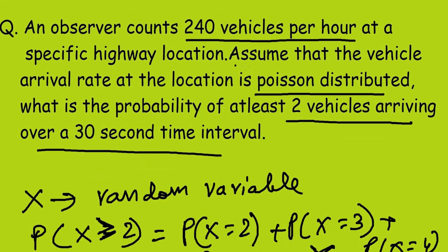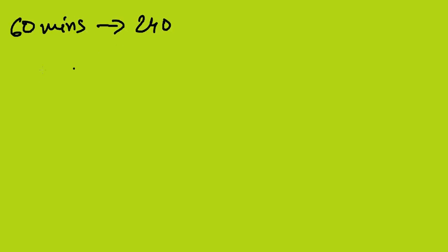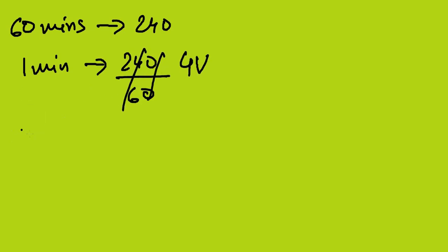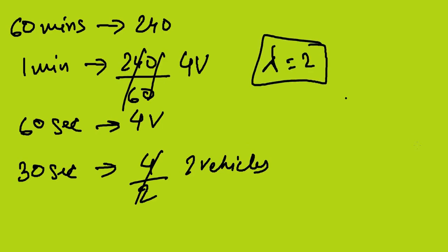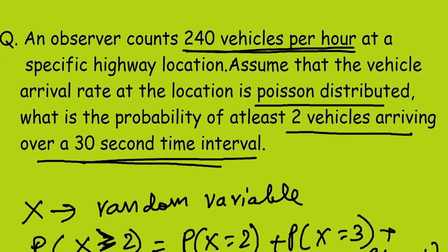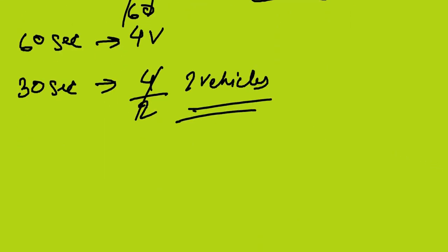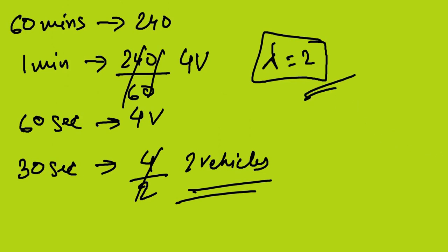First we calculate the mean. They gave 240 vehicles per hour, meaning 240 vehicles in 60 minutes, so 4 vehicles per minute, i.e., 4 vehicles in 60 seconds. In 30 seconds, 4/2 = 2 vehicles. So the mean lambda equals 2 for the 30-second interval.